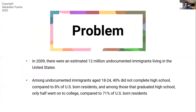And this number is increasing over time. However, among these undocumented immigrants that are college-going age — ages 18 through 24 — 40% did not complete high school, compared to 8% of U.S.-born residents. And among those that did graduate high school, only about half went to college, compared to 71% of U.S.-born residents. That data was calculated in 2017.